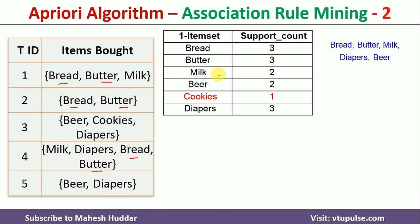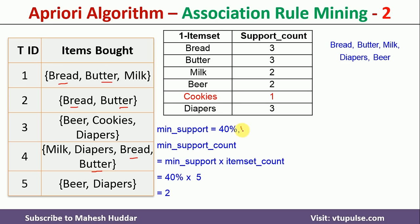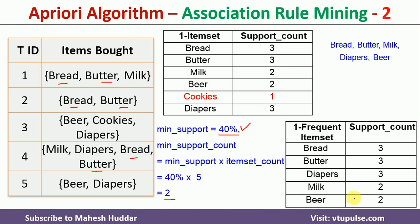From the one-itemset table, we generate the one-frequent itemsets. The minimum support given is 40%, so the minimum support count equals 40% multiplied by the total transaction count of 5, which gives 2. So any itemset with a support count of 2 or more qualifies. Except for cookies, all items are one-frequent itemsets, and I have written those in the one-frequent itemset table.